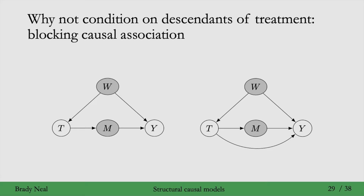And it doesn't need to be that we block all of the causal association. For example, in this graph, there is association flowing directly from t to y that doesn't go through m. So when we condition on m, we only block part of the causal association. That's one reason why we don't want to condition on descendants of treatment.